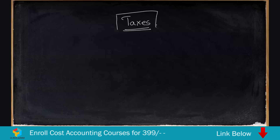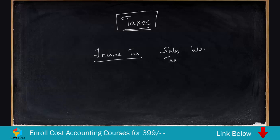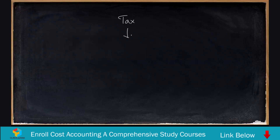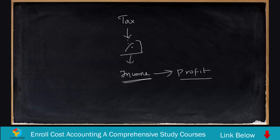So when we say that revenue has to be shared with the government in the form of taxes, what are the taxes? There are various types of taxes and they depend on the country. In India, for example, we have income tax — where tax is levied on your income — then we have sales tax, wealth tax, and excise duties. Tax is computed by applying a certain percentage on your income, and if you are running a business, that income is nothing but your profit.